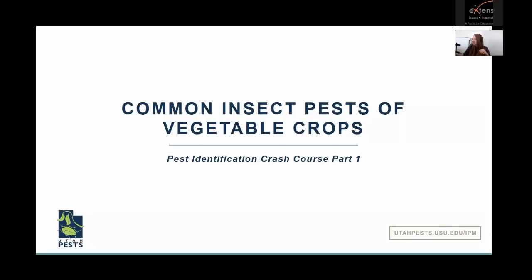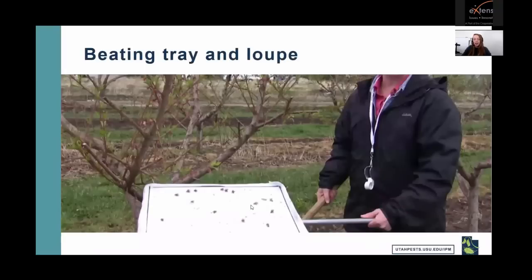Other things I take are a jeweler's loupe, which helps you see smaller insects up close — you can find it on Amazon, I'd get about 30x or 40x magnification. I also take a bottle with alcohol to preserve insects for later identification, and a paintbrush you can dip in the alcohol to catch fast-moving insects. I bring a baggie in case plants show what looks like a disease, a camera with macro options for close-up pictures, and a beating tray — you shake plant parts over it and use the loupe to look for insects, both beneficials and pests.